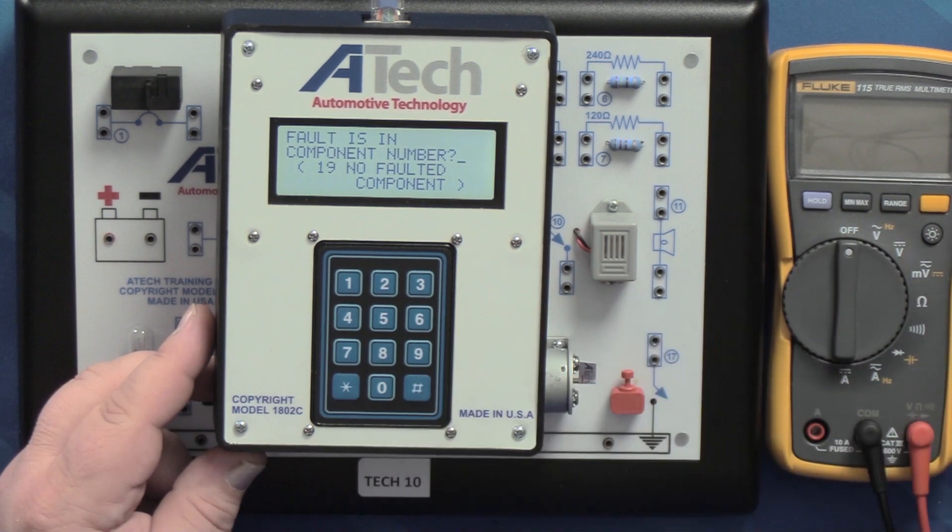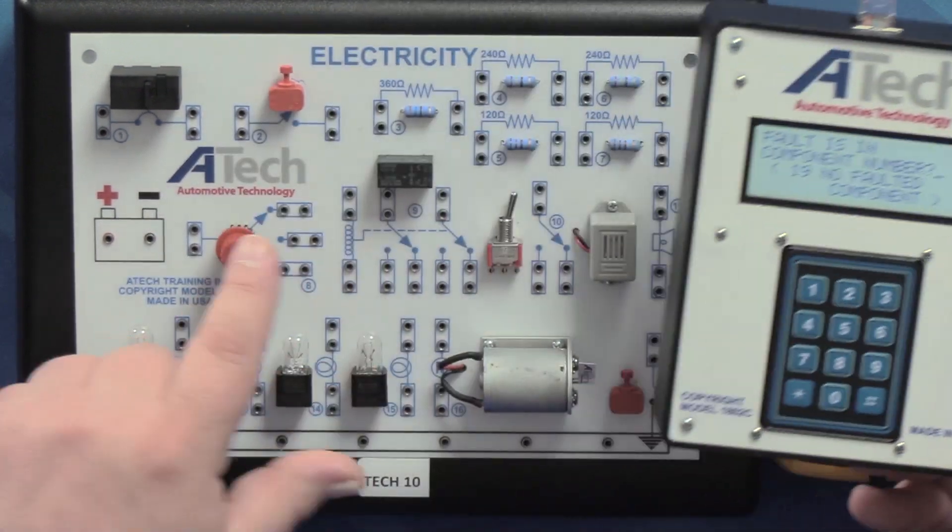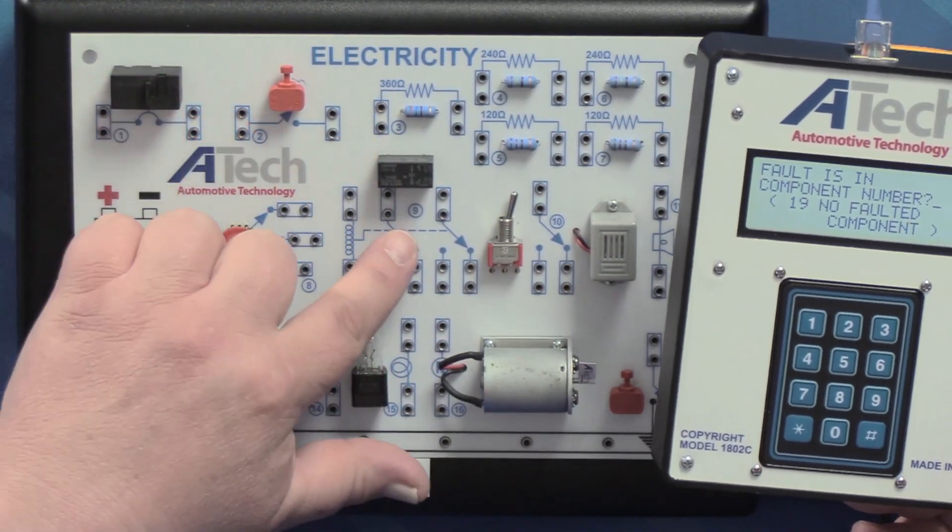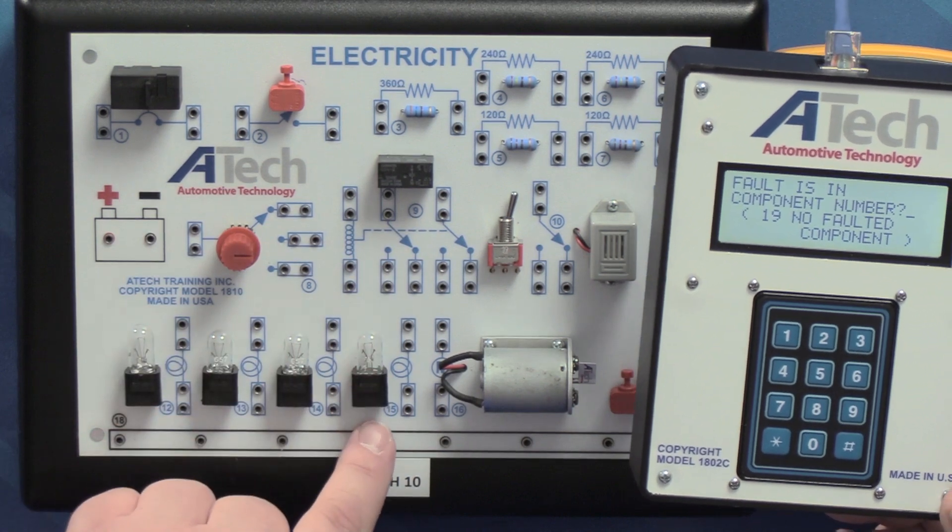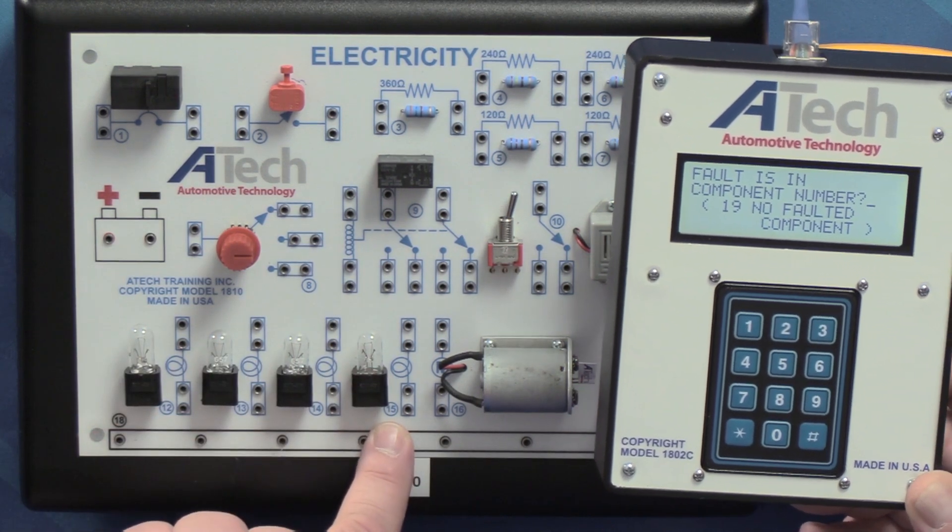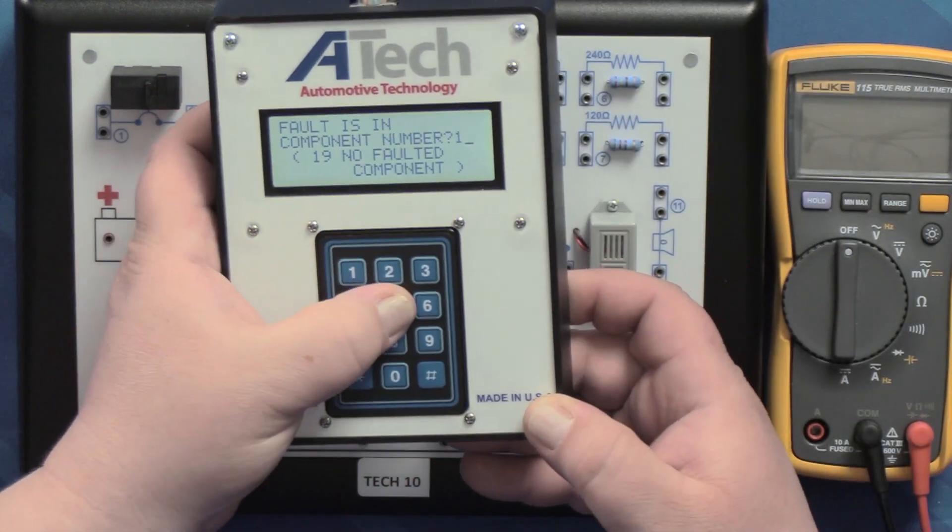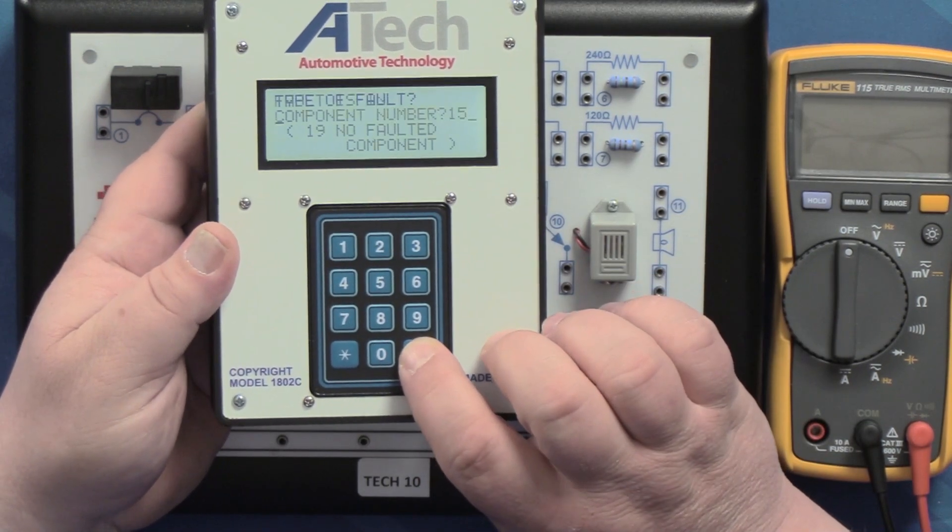It's going to ask you the fault is in what component number, and if you'll notice each of our components do have a little number so that way you can identify. So let's say if this bulb right here number 15, we're just punching component 15 because we think that's where the problem is.